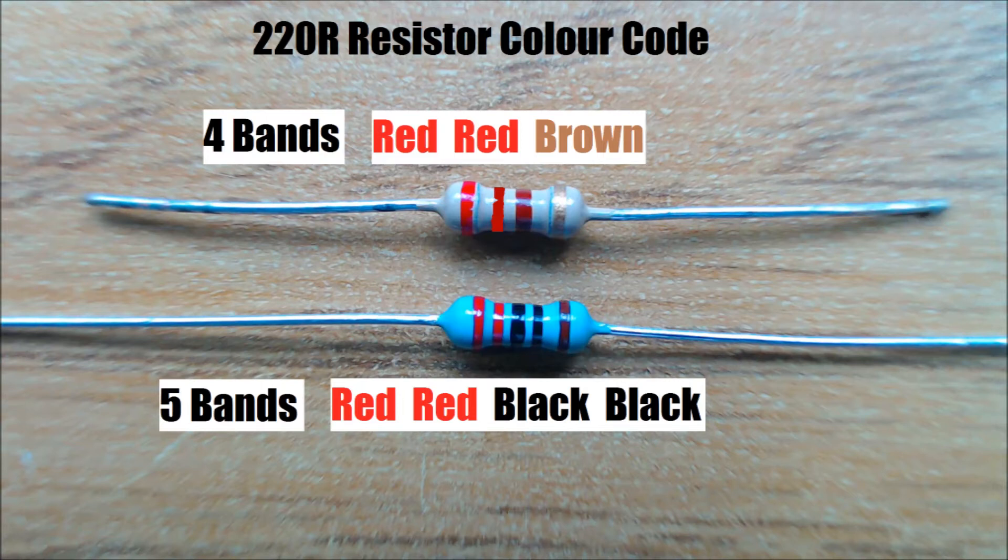Resistors have a colour code that indicates their value. If the resistor has 4 bands then it will be red, red, brown. The 4th band is the tolerance and can be brown, red, gold or silver, and for this application it doesn't matter. If the resistor has 5 bands then it will be red, red, black, black, and the 5th band is the tolerance. They also have a power rating and quarter watt is a good choice.